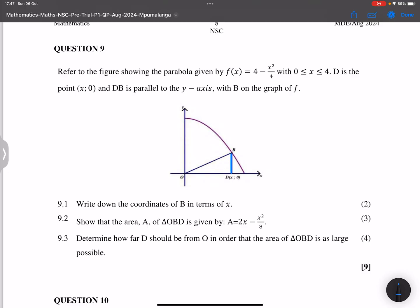Now they say write down the coordinates of B in terms of x. So if this is a vertical line, it means if this D here is x, that means the x value at B is also x. But remember, the y value is on the graph, the purple graph, f(x). So that means the y value would be 4 - x²/4. So those are the coordinates of B.